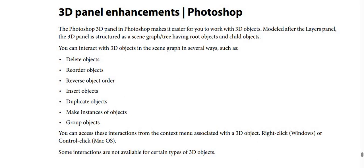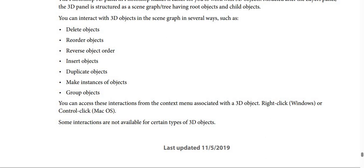The Photoshop 3D panel makes it easier to work with 3D objects. It is modeled after the layers panel and structured as a scene graph with parent group objects and child objects. You can interact with 3D objects in the scene graph in several ways, such as delete, reorder, reverse order, insert, duplicate, make instances, and group objects.